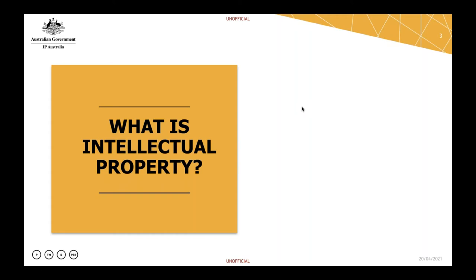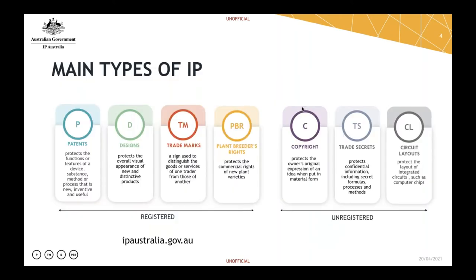Essentially it's protecting ideas, discoveries, etc., and it falls under two broad groupings. There's registered rights which are all maintained or administered by IP Australia — patents, designs, trademarks, and PBR, Plant Breeders Rights, which is the subject of today's presentation. Just for your information, there are other webinars about the other three rights on our website, as they can overlap with some of the stuff we do in PBR.